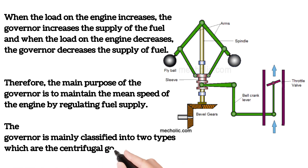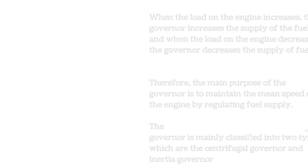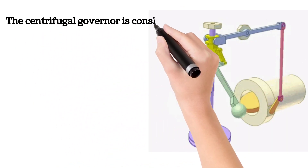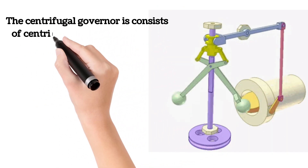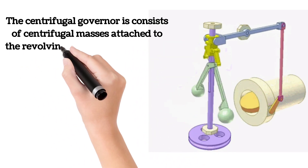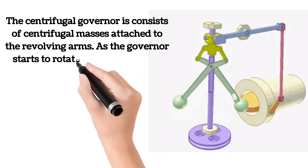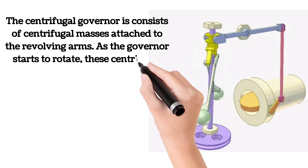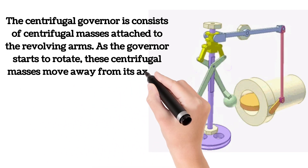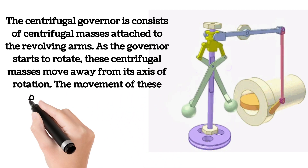The governor is mainly classified into two types: the centrifugal governor and the inertia governor. The centrifugal governor consists of centrifugal masses attached to revolving arms. As the governor starts to rotate, these centrifugal masses move away from its axis of rotation.